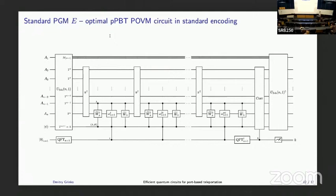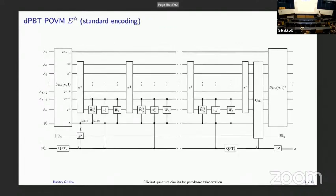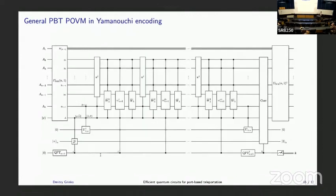If you want to implement the other POVMs: for standard PGM this was the optimal probabilistic protocol. For EPR probabilistic PBT you literally add one qubit and do an additional easy-to-implement rotation. For deterministic PBT you add an n-dimensional system and do a controlled generalized Pauli operation. For a generic PBT with parameterized G matrix you combine those two. In the Yamanouchi encoding, you get more efficient storability but the gates become more non-local, so you cannot optimize the circuit depth as well — the depth becomes worse but the auxiliary qubit count is better.